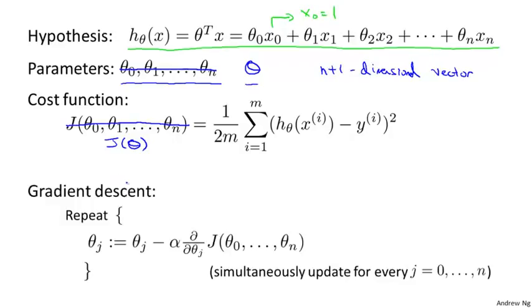Here's what gradient descent looks like. We're going to repeatedly update each parameter theta j according to theta j minus alpha times this derivative term. Once again, let me just write this as J of theta. So theta j is updated as theta j minus the learning rate alpha times the partial derivative of the cost function with respect to the parameter theta j.